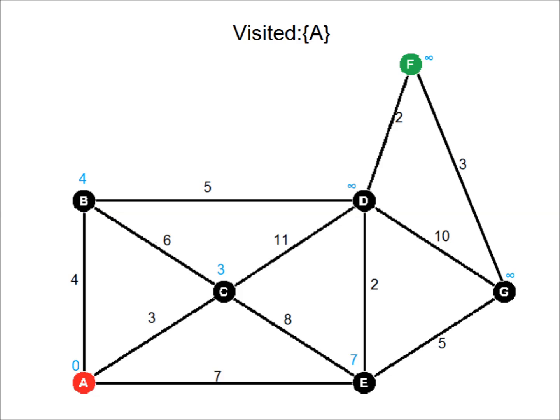Now we need to pick the next unvisited vertex with the lowest calculated distance. This is C with a value of three. We add C to the visited set. Since C is a neighbor of three unvisited nodes — B, D, and E — we calculate new values for B, D, and E. The distance to C is three, and we add it to the edge weights between C and B, C and D, and C and E. For B we get a value of nine, which is higher than its current value, so we ignore that. For D we get a value of fourteen, which is lower than infinity, so we replace D's tentative distance with fourteen. For E we get eleven, which is more than seven, so we ignore that value as well.